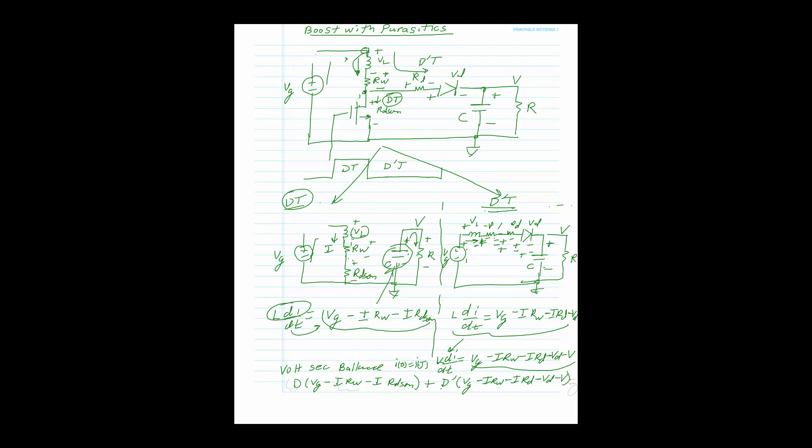We set the volt-second balance to zero: D·(V_G − I·R_W − I·R_DS(on)) + D'·(V_G − I·R_W − I·R_D − V_D − V) = 0. Multiplying both sides by T converts this to the volt-second balance condition.